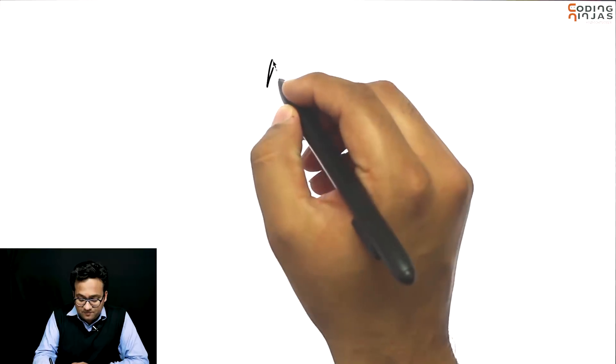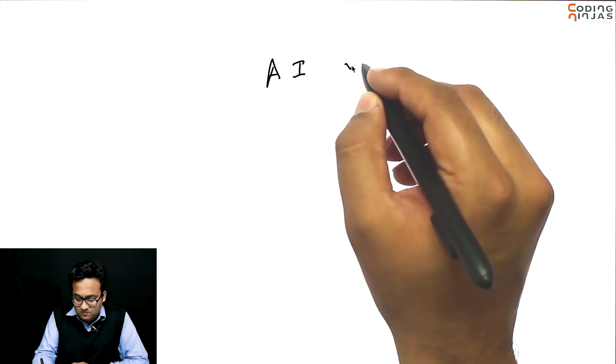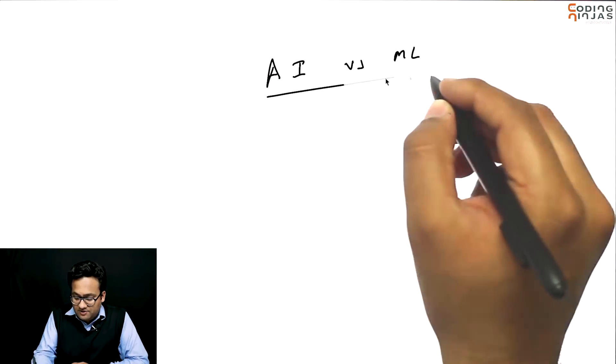Now, sometimes people talk about AI, and sometimes they're talking about machine learning. What exactly is the difference between AI and machine learning? AI actually is a part of computer science which basically means let's somehow make machines intelligent so that they can take smart decisions.